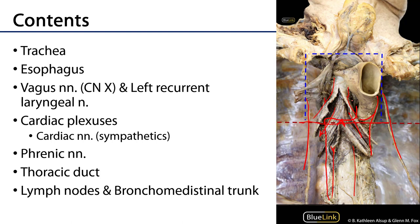Speaking of lymphatics, we'll find some lymph nodes in this region — tracheobronchial nodes in this area — which feed into bronchomediastinal trunks that ascend the superior mediastinum heading towards the venous angles at the root of the neck.